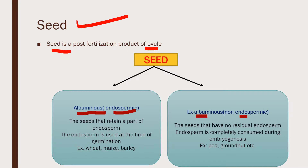Albuminous or endospermic means the seed retains part of the endosperm. In some seeds the endosperm is persistent, and this endosperm is used at the time of germination for the developing embryo. Examples are wheat, maize, and barley. Exalbuminous means no residual endosperm is found — the endosperm is completely consumed during embryogenesis. Examples for exalbuminous are pea and groundnut.